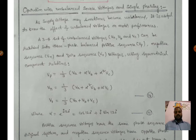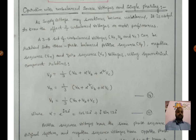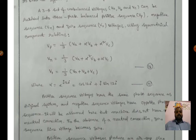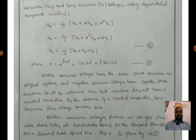Using symmetrical components: Vp = (1/3)(Va + α·Vb + α²·Vc); negative sequence Vn = (1/3)(Va + α²·Vb + α·Vc); zero sequence V0 = (1/3)(Va + Vb + Vc), where α = e^(j120°) = cos120° + j·sin120°. Positive sequence voltages have the same phase sequence as the original system.